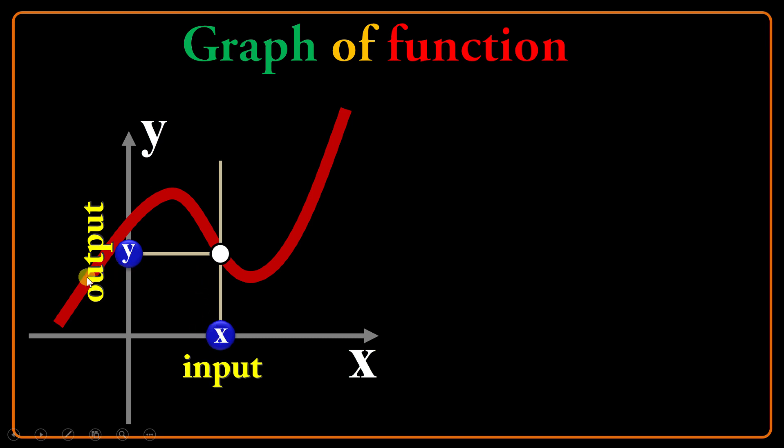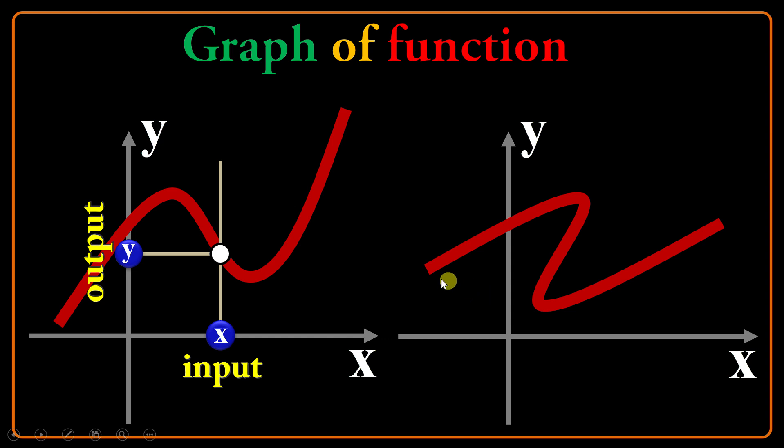What about this one? No, this graph is not a function. As you see, in a part of that graph, if I draw the vertical test line, it will cross the graph in more than one point. So for every input, I don't have necessarily one output, at least in a part of graph. So generally, it's not regarded as a function.